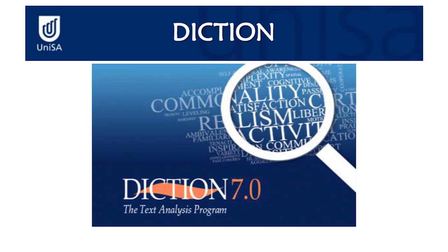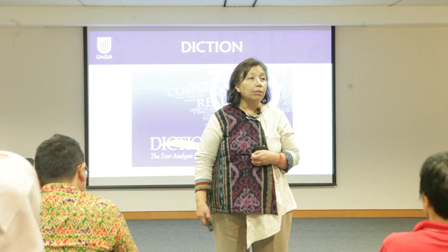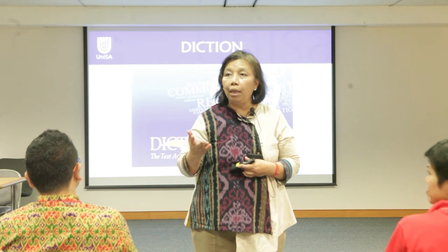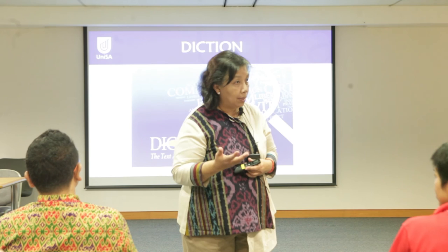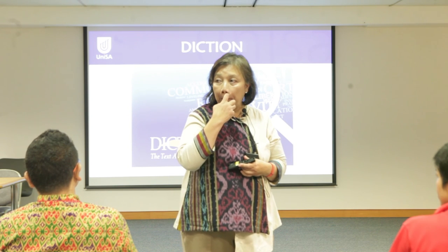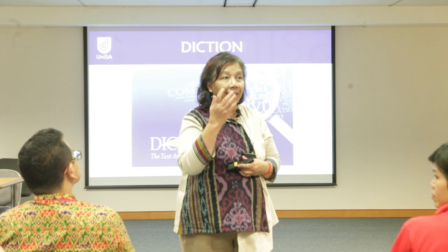The third software is Diction. This is the one that analyzes aggressiveness and uncertainty. Imagine being able to see that a person's speech contains a lot of uncertainty and aggression. Uncertainty is indicated by words like 'maybe,' 'or could be,' 'perhaps' — information that is not certain.